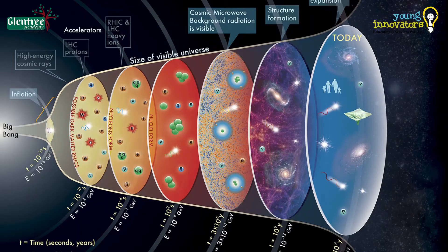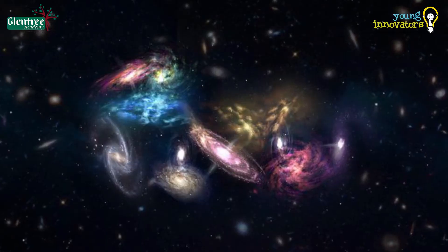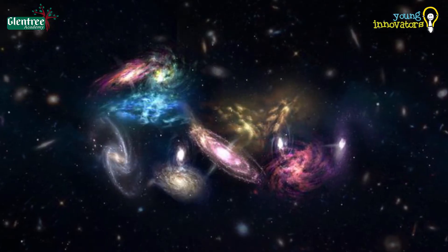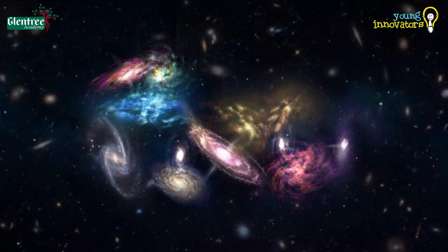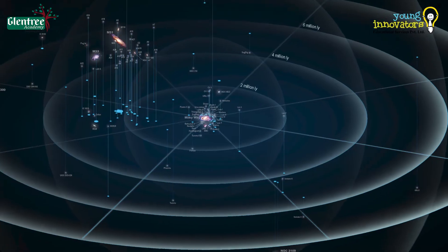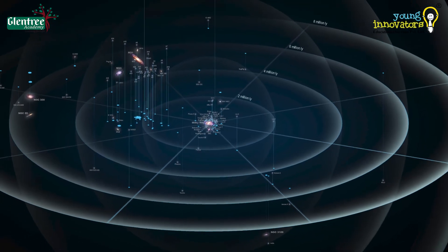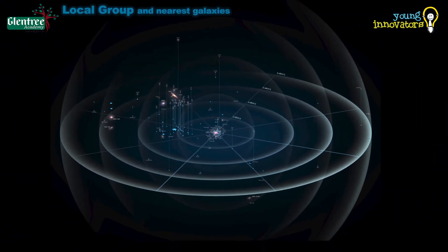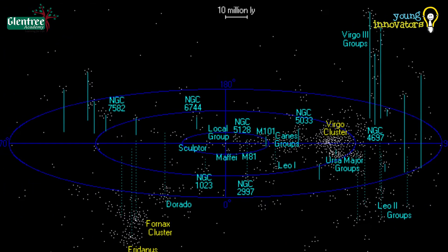These particles further combined to form matter like gas clouds, nebulae, stars, galaxies, etc. Many galaxies combined together are called a cluster of galaxies. The name of our galaxy is the Milky Way Galaxy, which belongs to a group of galaxies called the Local Group, which is further located in another cluster of galaxies called Virgo.